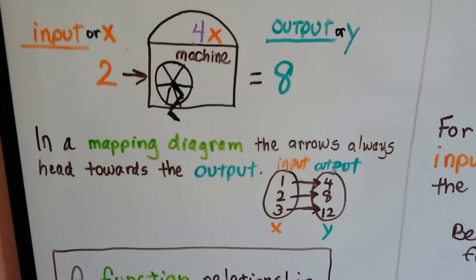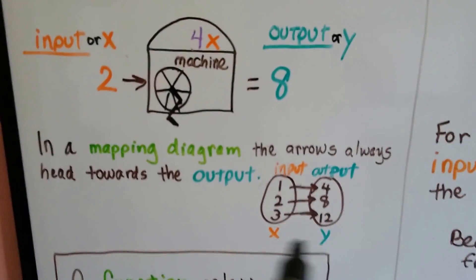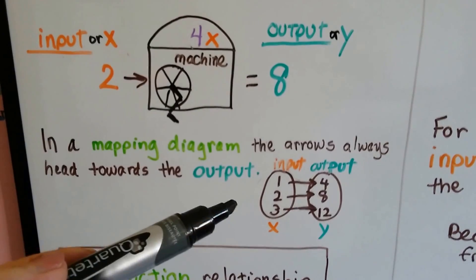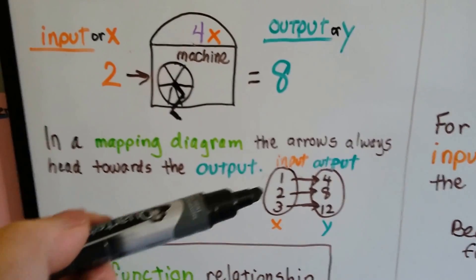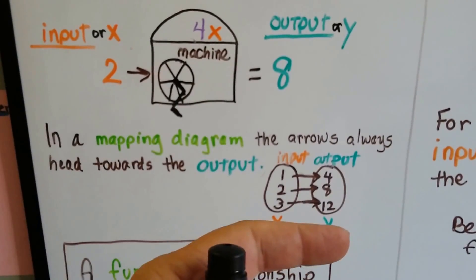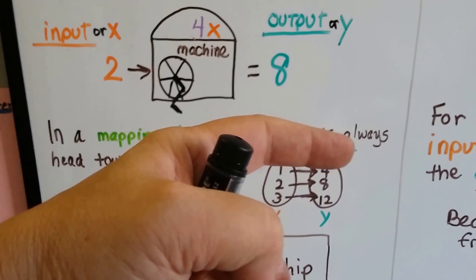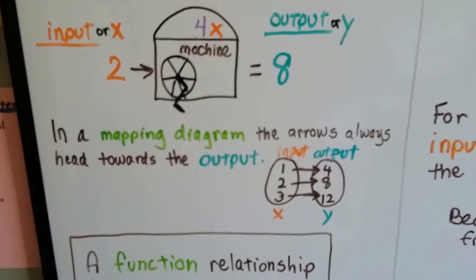And in a mapping diagram, that's what these two ovals with the arrows are, the arrows always head towards the output. So if they don't have any labels on them, you can tell which one's the output because the arrows are heading towards the output.